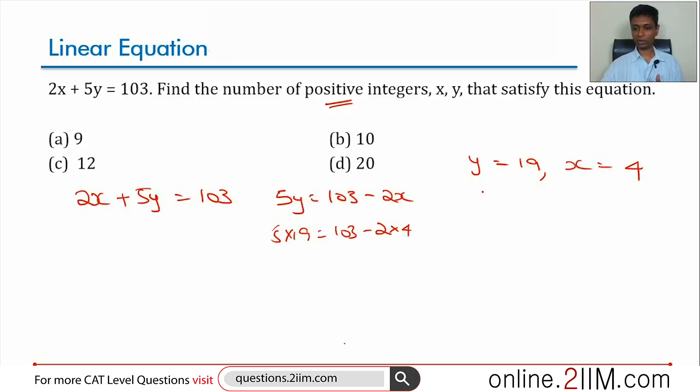If y equal to 19, x equal to 4 is the first value, next value will happen when I change x by a certain number. 2x becomes a multiple of 5 so this can offset that. If 2x has to be a multiple of 5, x has to be a multiple of 5. X becomes 9, 2x becomes 10. 10 has to be offset here, y will be 17.